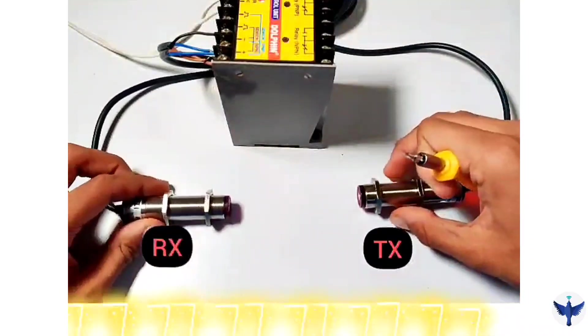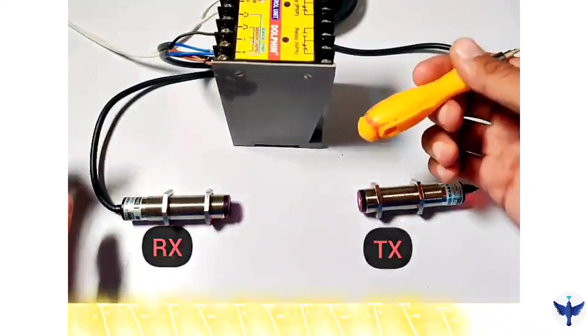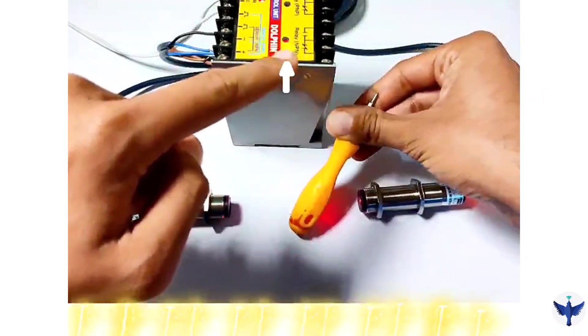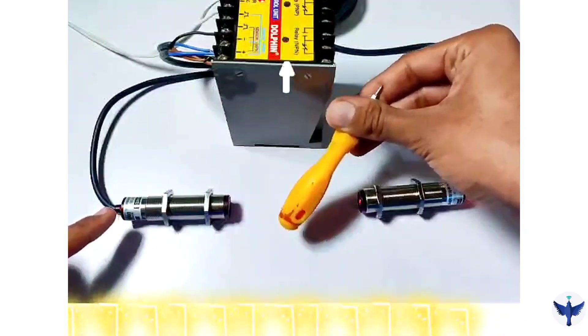So when I point it towards the receiver, I get the output. I am using this target and when I obstruct it, you can see here the output and at the back LED indication you can also see the output.